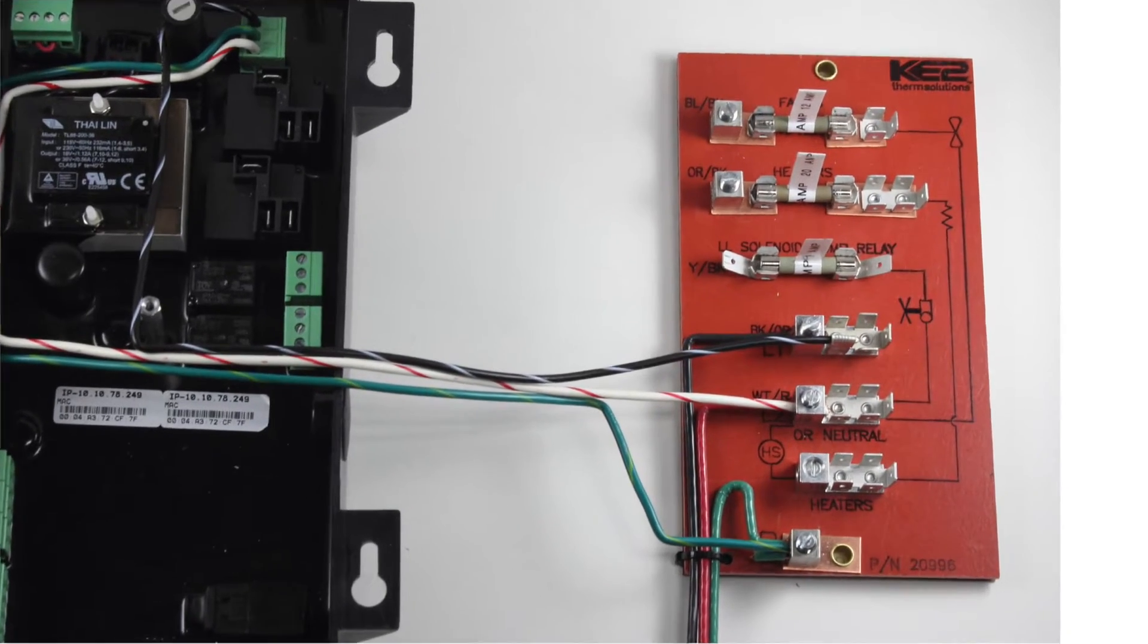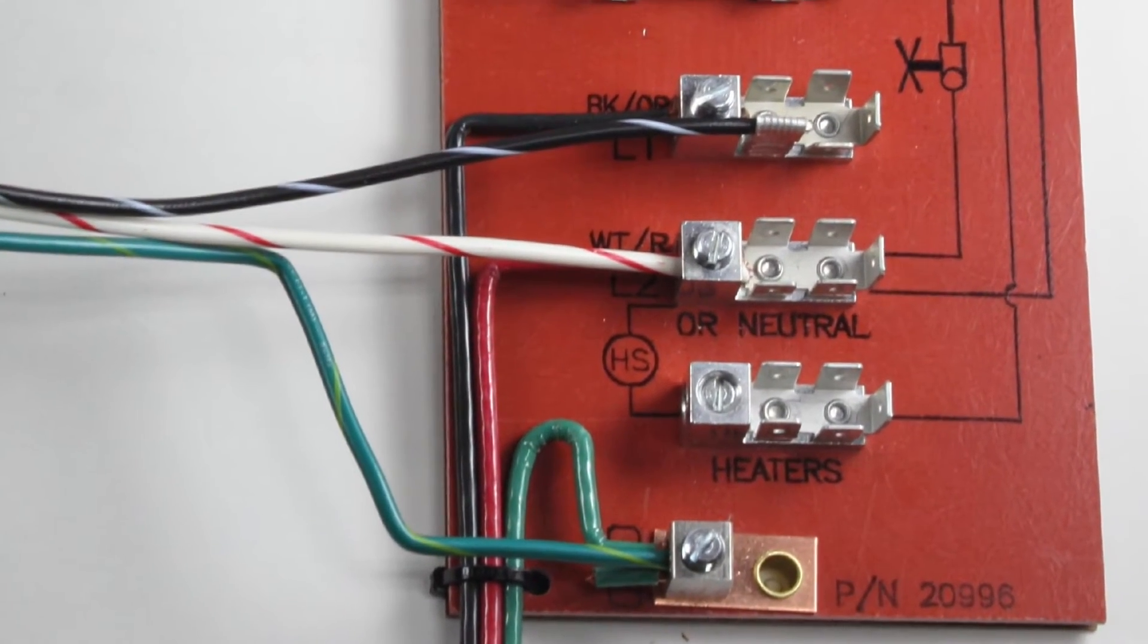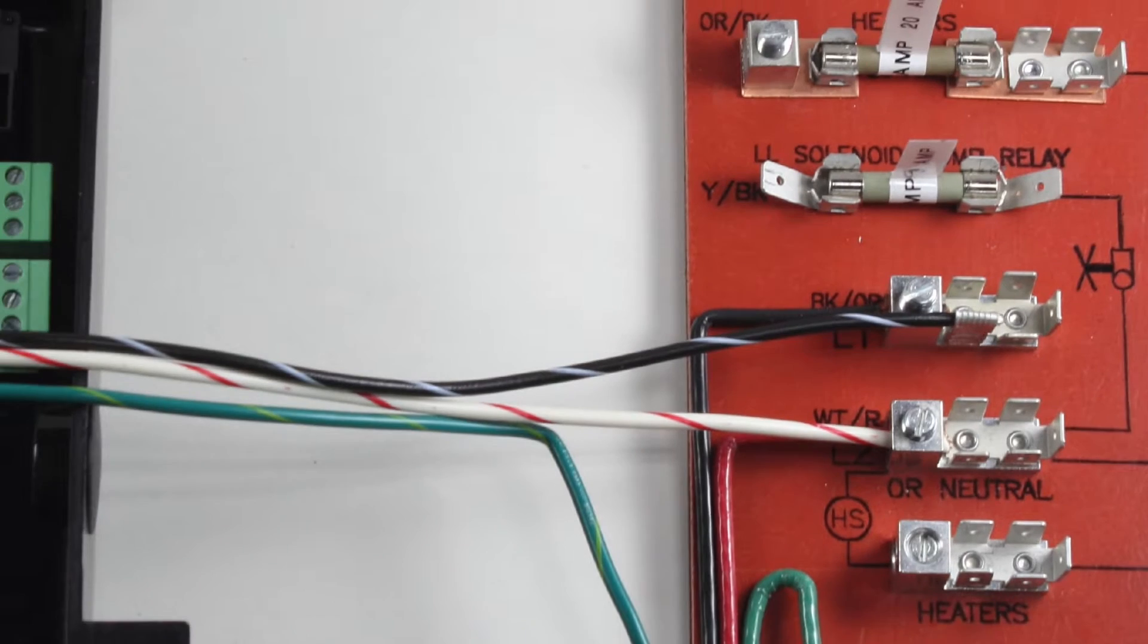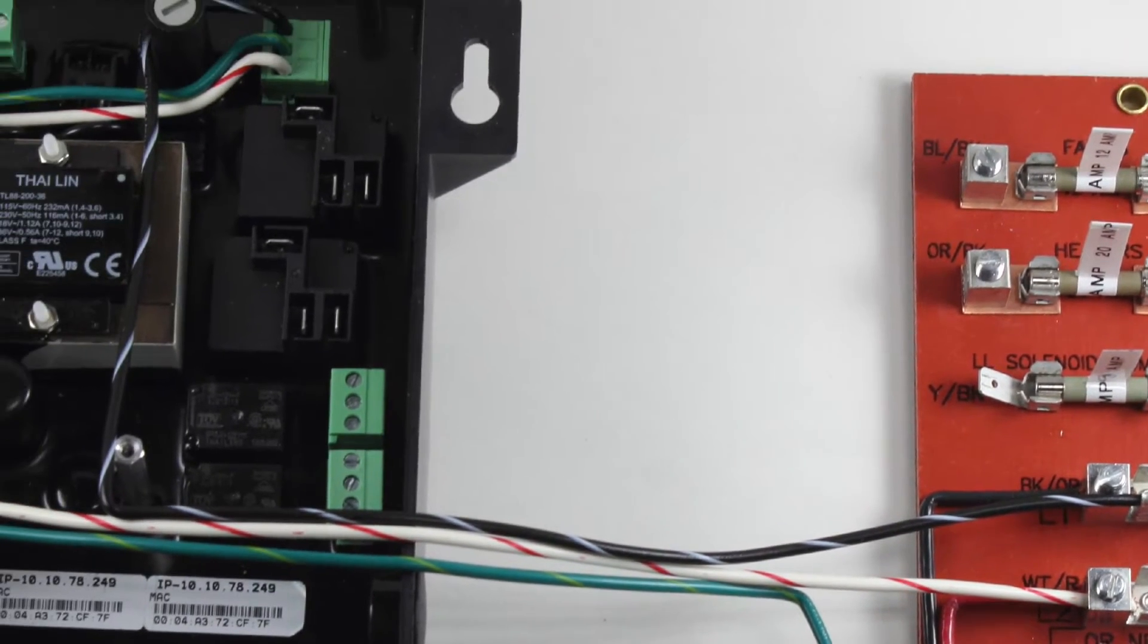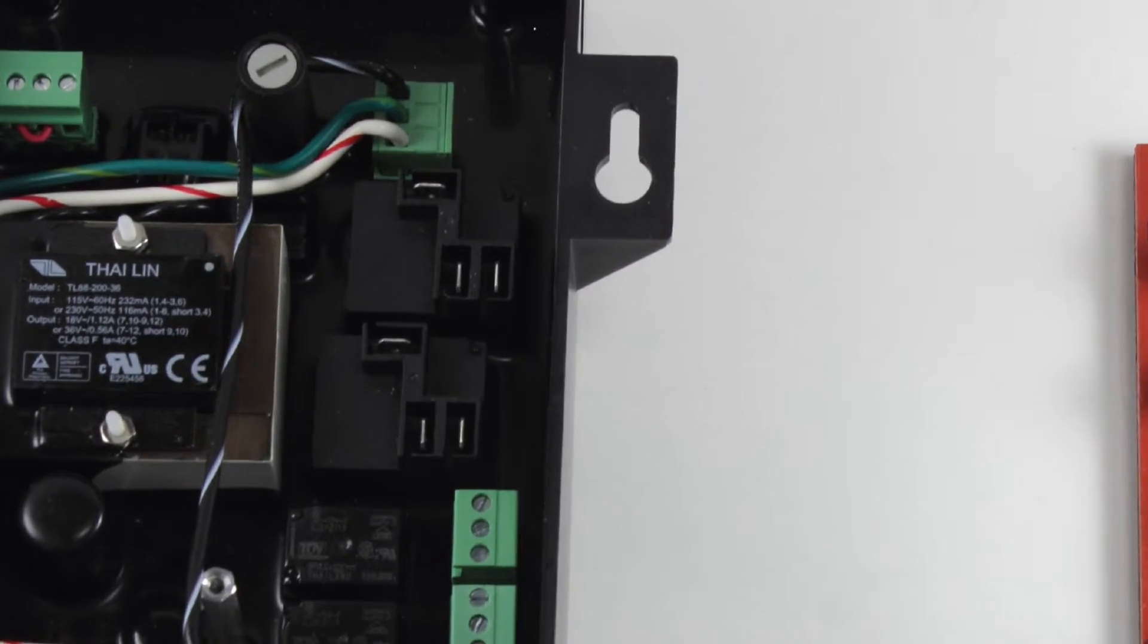Lastly, connect the black line 1 power on the terminal board to the controller using the black with white stripe to L1 location as shown. The controller now has the potential to be powered.